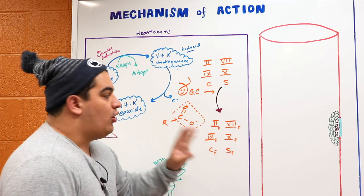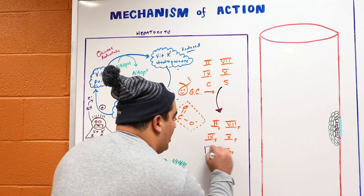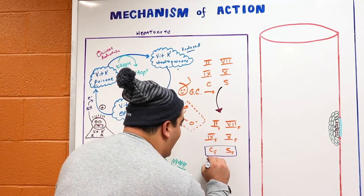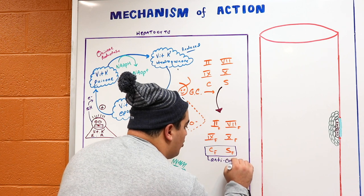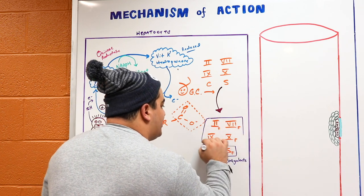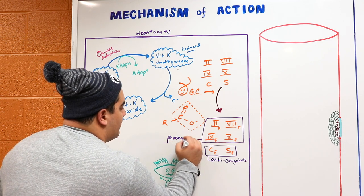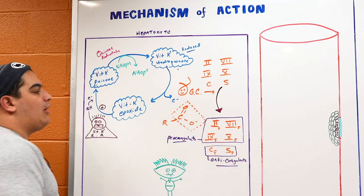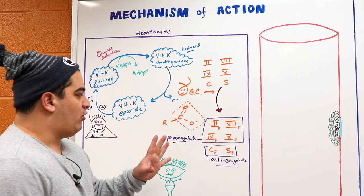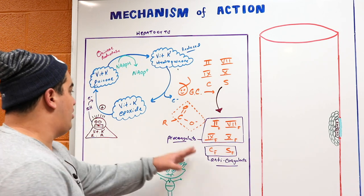Protein C and Protein S are what we call anticoagulants — they are naturally anticoagulative. Whereas Factor 2, Factor 7, Factor 9, and Factor 10 are more of your pro-coagulants. These pro-coagulants want to promote clot formation, while Protein C and S want to inhibit clot formation. We'll talk about why that distinction is important when we get into side effects.